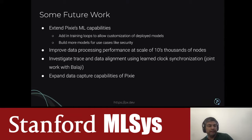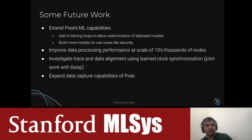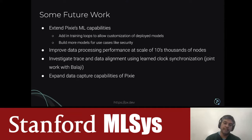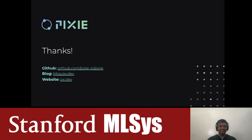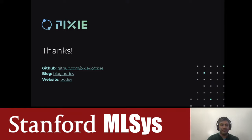We're also looking at using accurate clocks and timestamps to synchronize information between multiple nodes — figuring out actual network latencies or aligning traces in distributed tracing. We're always trying to expand data capture capabilities, adding to our eBPF-based collector and utilizing other available collectors. You can check out our GitHub repo, our blogs with detailed information, and our website. Thanks everyone for listening, and I look forward to any questions.